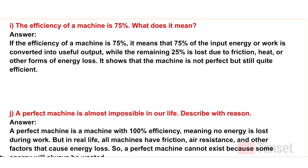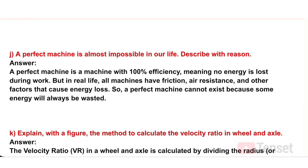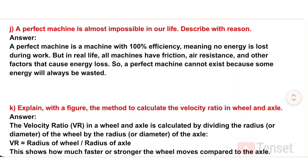J) A perfect machine is almost impossible in real life — describe with reason. Answer: A perfect machine is one with 100% efficiency, meaning no energy is lost during work. But in real life, all machines have friction, air resistance, and other factors that cause energy loss. Therefore, a perfect machine cannot exist because some energy will always be wasted.